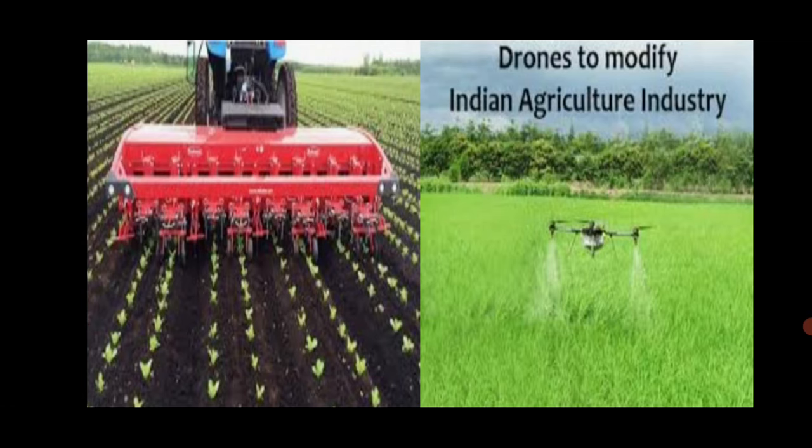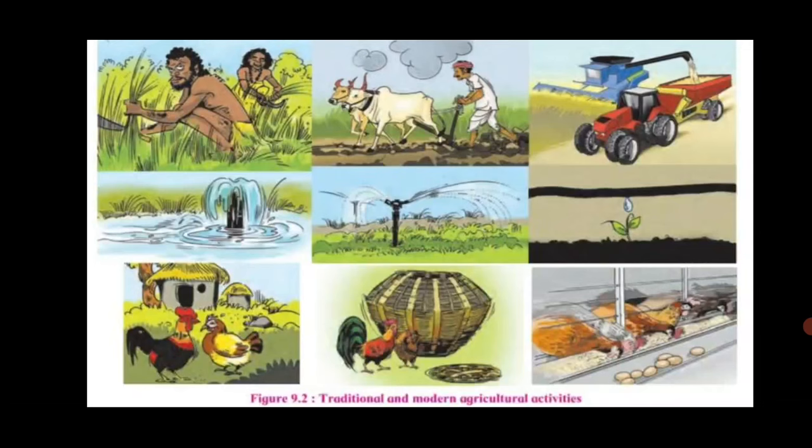Advanced technology is employed. In agriculture, cultivation of crops is considered to be the main and most important occupation. In modern technology, you can see the second picture here — drones to modify Indian agriculture industry. There has been advancement in technology in the field of agriculture. In this picture, we see the changes in agricultural practices.